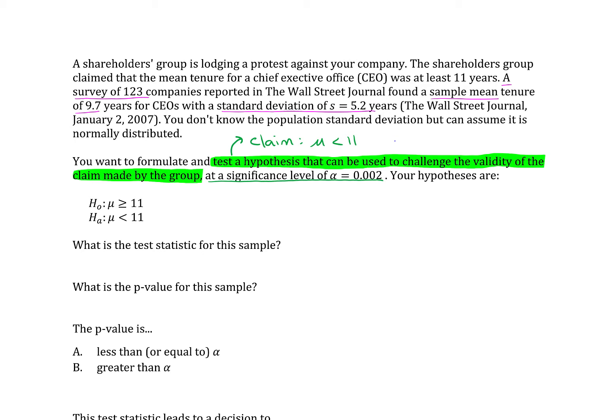Now, since we're testing a mean, the options that we have are to use the normal distribution or the t distribution for our calculations. The normal distribution would be used if we knew the population standard deviation of the original population. But we're told right here, outright, you do not know the population standard deviation. So we don't know that. That rules out using the normal distribution.